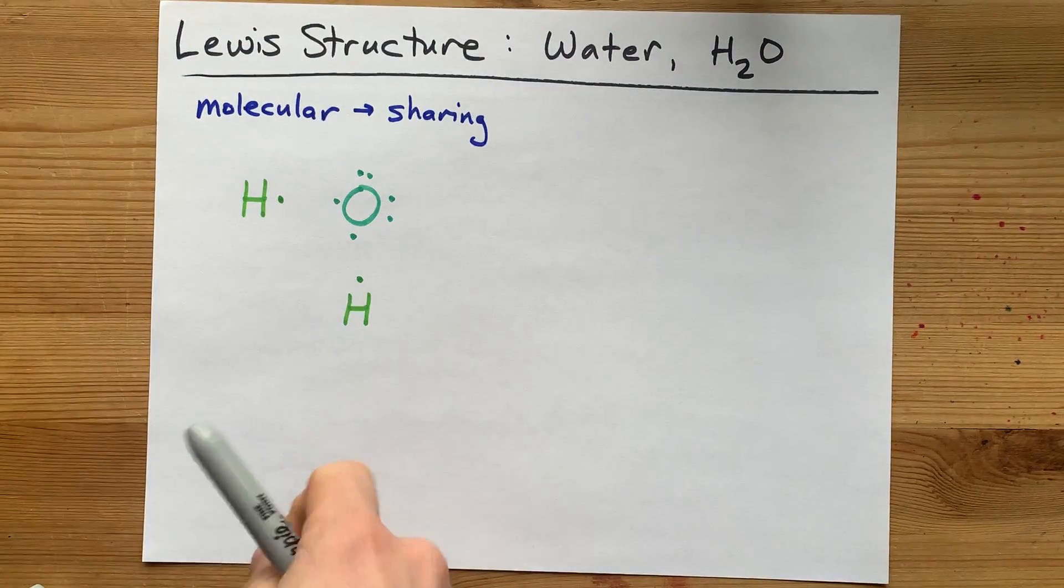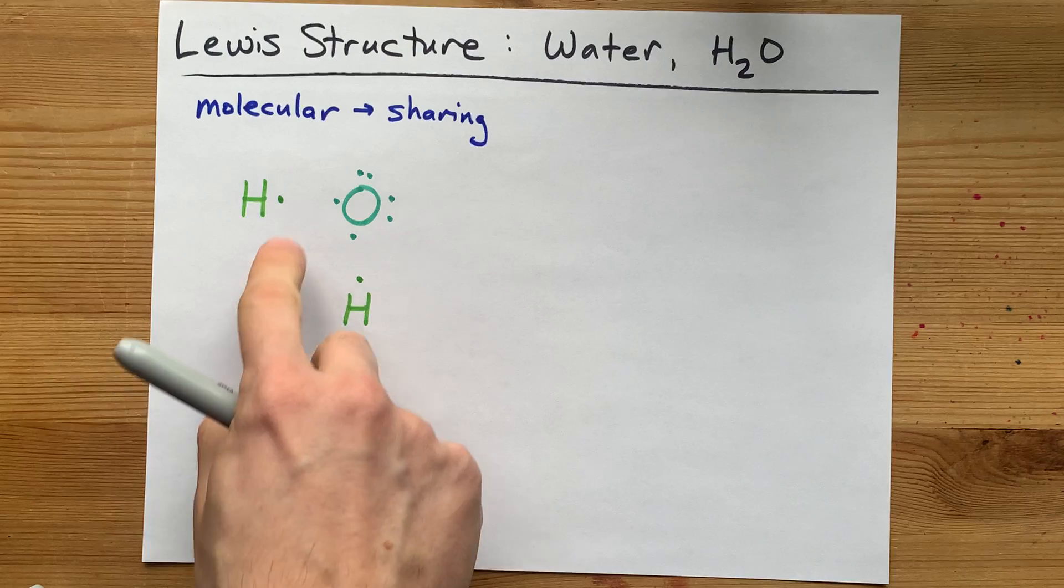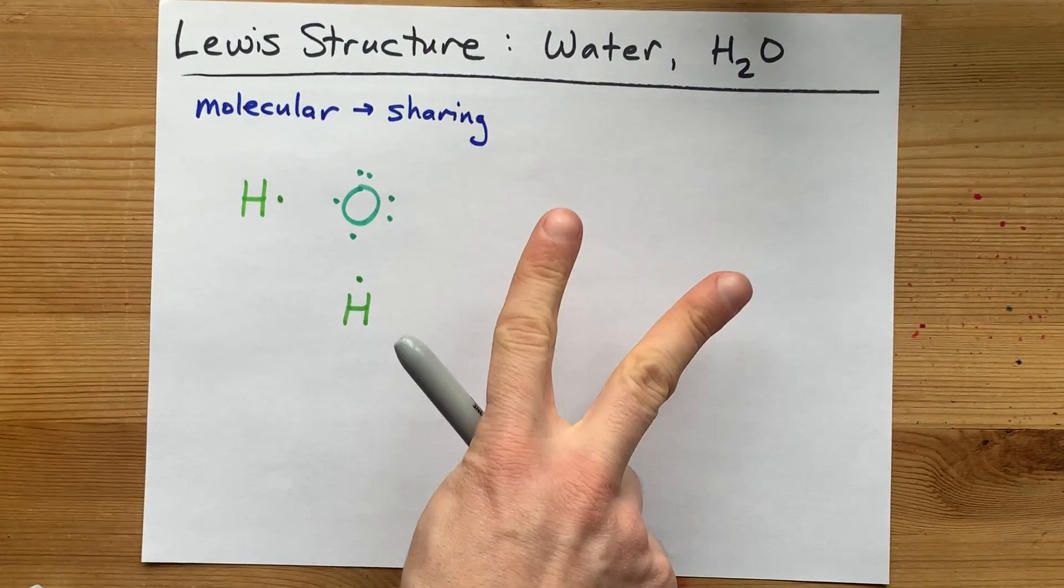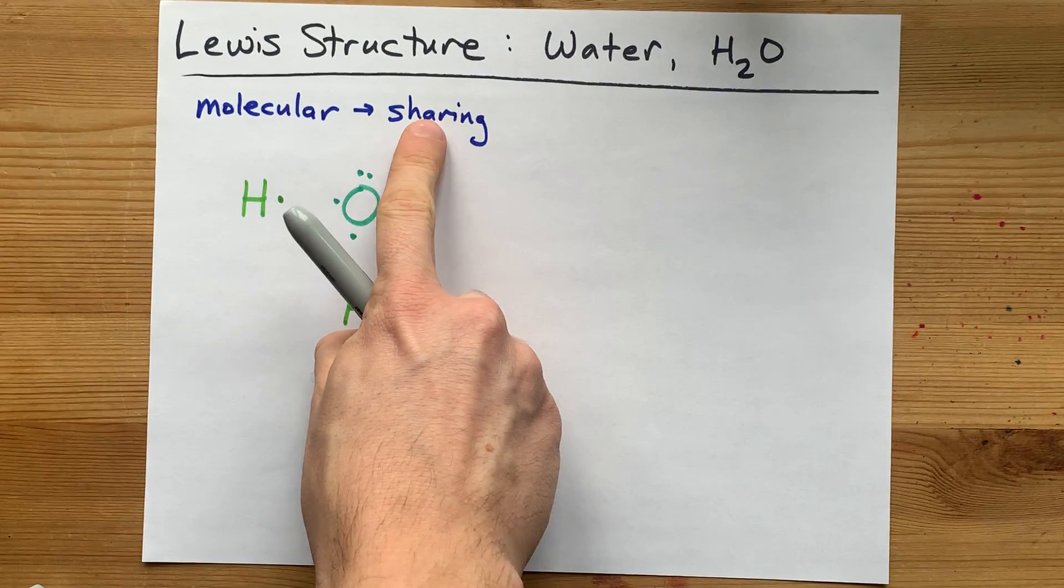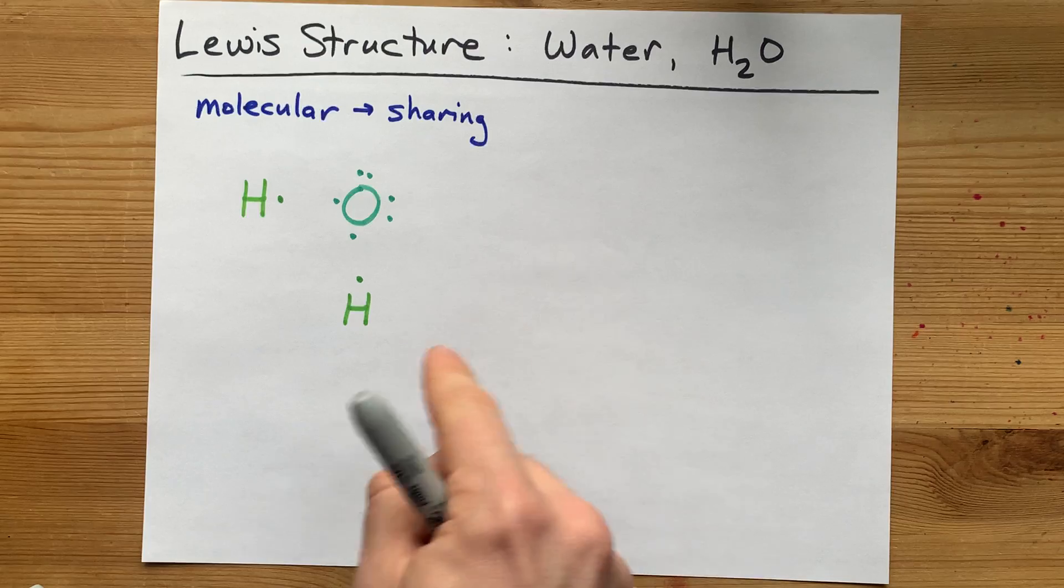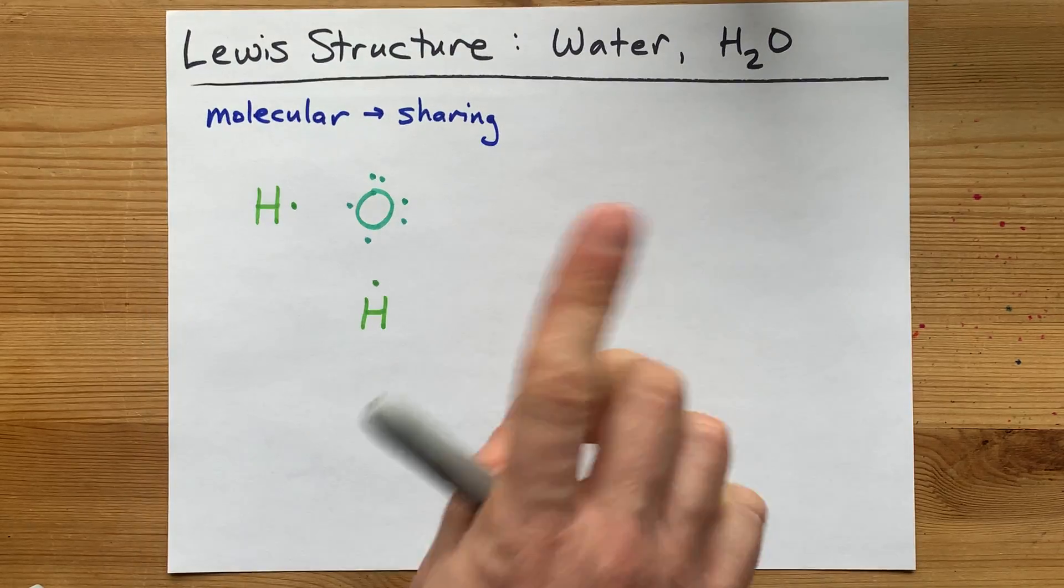...or eight valence electrons around it. Now, it brought six. So, where is it going to get the extra two? It's going to share an electron with each of the hydrogens in exchange for hydrogen sharing its electron back.